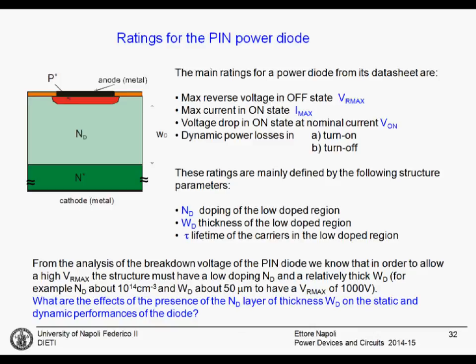These ratings are mainly defined by the following structure and design parameters: doping ND, that is the doping of the low-doped region; WD, the thickness of the low-doped region; and Tau, the lifetime of the carriers in the low-doped region. The lifetime is the average time a carrier survives in its free state before recombining with a hole or returning to the stable steady state.